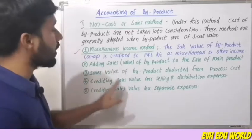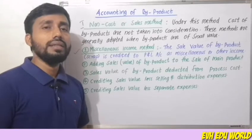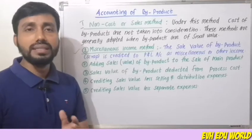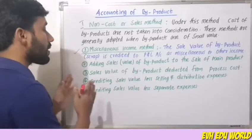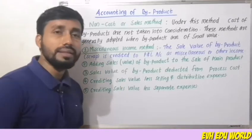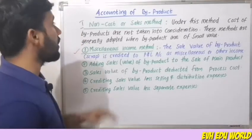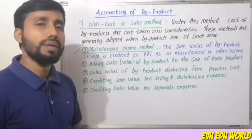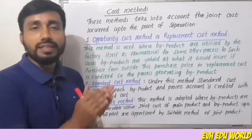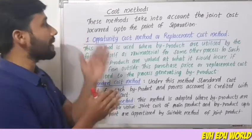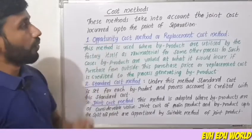The next variant is crediting sales value less separate expenses. The second main method is the cost method. Under the cost method, this method takes into account the joint cost up to the point of separation.